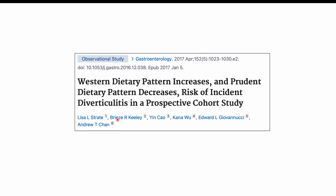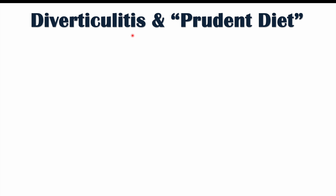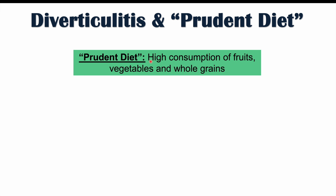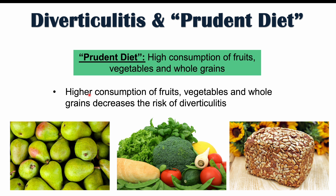Along with the Western diet, that same study discusses the prudent diet — described as high consumption of fruits, vegetables, and whole grains. Comparing it to the Western diet, they found that the prudent diet decreases the risk of diverticulitis. This makes sense, as those food items have higher levels of fiber than items in the Western diet, which leads us into the next diet we'll discuss.